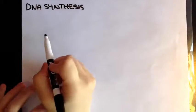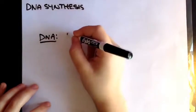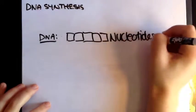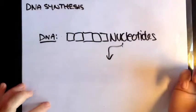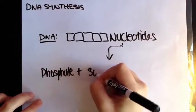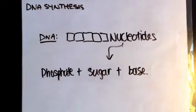So before I go on illustrating the whole process, there are a few key ideas you have to keep in mind. Basically, DNA is made up of a bunch of nucleotides. What are nucleotides made up of? Well, they're made up of a phosphate group, a sugar, and a base. Those are your ingredients to a nucleotide that makes up a DNA strand.